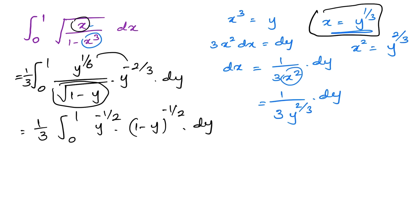Now we are happy because we know this is definitely beta function. We know beta of mn is equal to integral from 0 to 1, t to the m minus 1, 1 minus t to the n minus 1 dt. If we compare this general formula and this one...